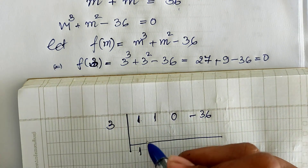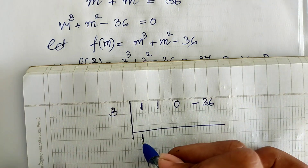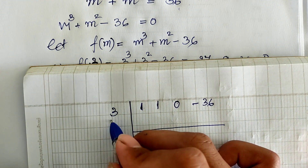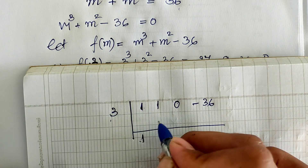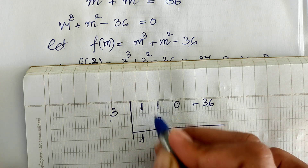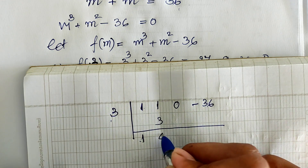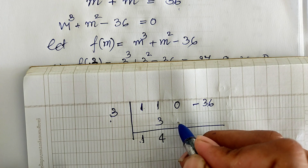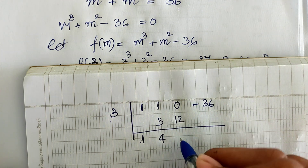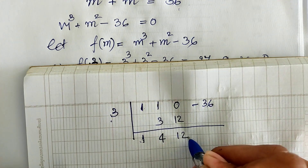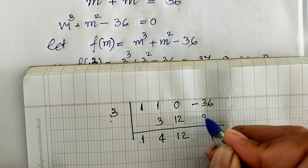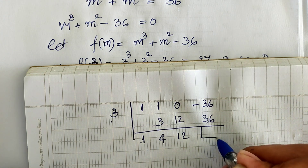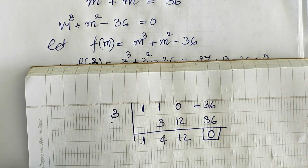I copy 1 down. Then 1 multiplied by 3 equals 3 — I write it down and add to get 4. Then 4 multiplied by 3 gives 12. Then 12 multiplied by 3 gives 36, and adding with minus 36 we get 0.